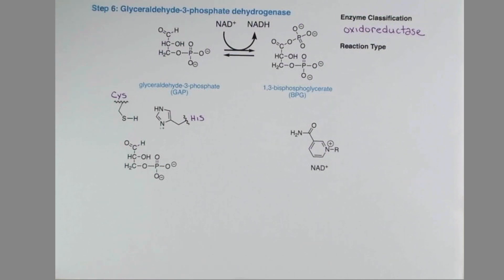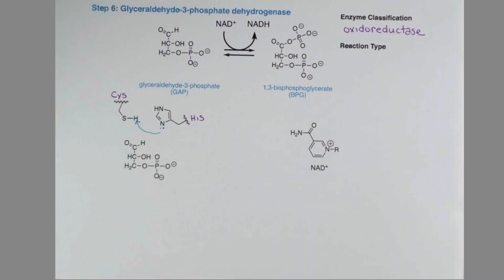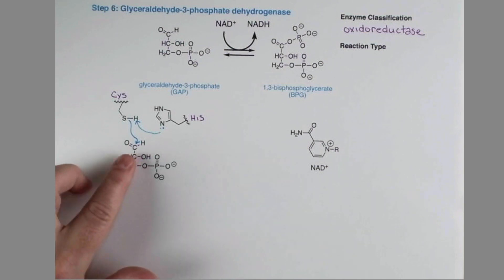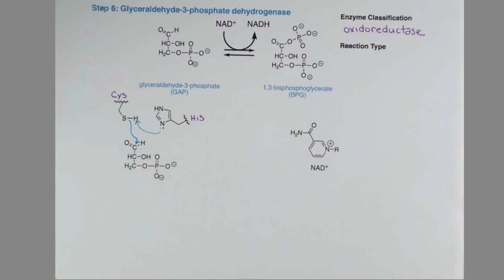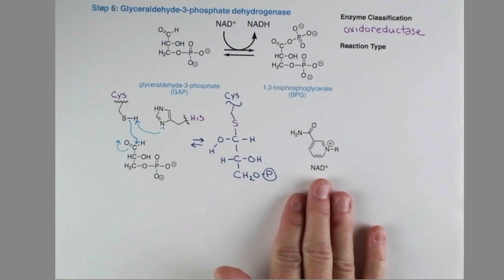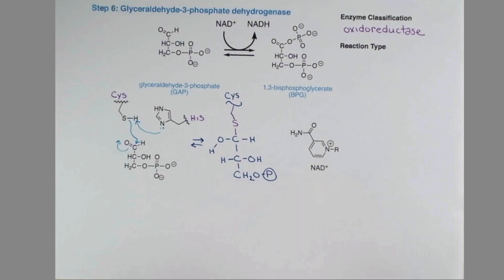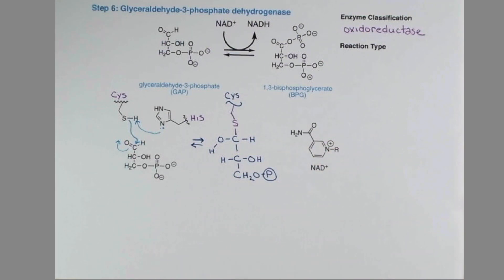Acting as a base, histidine will deprotonate the thiol of cysteine, and a lone pair on sulfur can attack this carbon in a carbonyl addition reaction. The arrow pushing looks like this: the lone pair on nitrogen attacks the hydrogen, and we can show the hydrogen-sulfur bond forming a bond to this carbon as we push the electrons from the double bond up onto oxygen. This gives an intermediate that's covalently bound to the enzyme. Now the coenzyme NAD+, which is bound to the enzyme through weak interactions, can come into play.